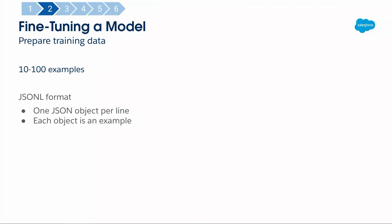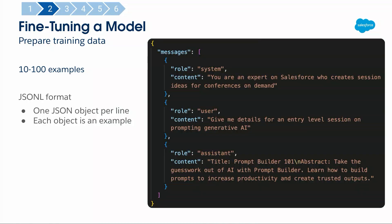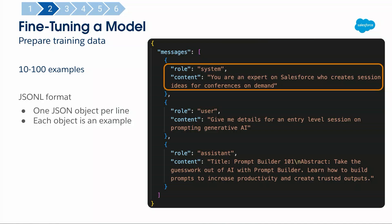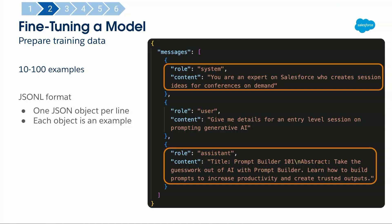Fine-tuning a model requires training data in a particular format — you can't just point at a Dreamforce website and say 'scrape all the session information.' It needs to be in JSON-L format, which is essentially a fully-fledged JSON object per line. Each JSON object is an example. The first thing I have to do is provide a role: for mine, it's 'you're an expert on Salesforce who creates session ideas for conferences on demand,' because that's what I'm trying to do.